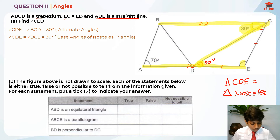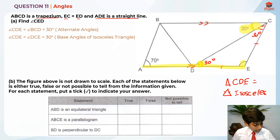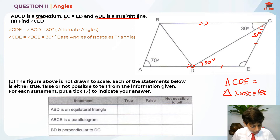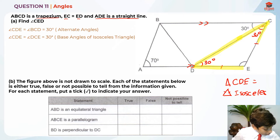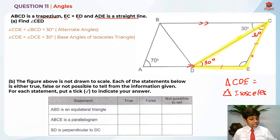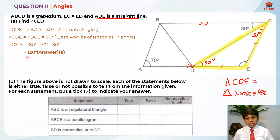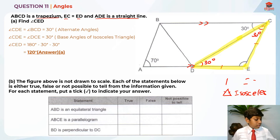Now we know that in triangle CDE, there are 180 degrees total and we already found two angles of 30 degrees each. So angle CED equals 180 degrees minus 2 times 30 degrees, which gives us 120 degrees. And this is the answer for part A.